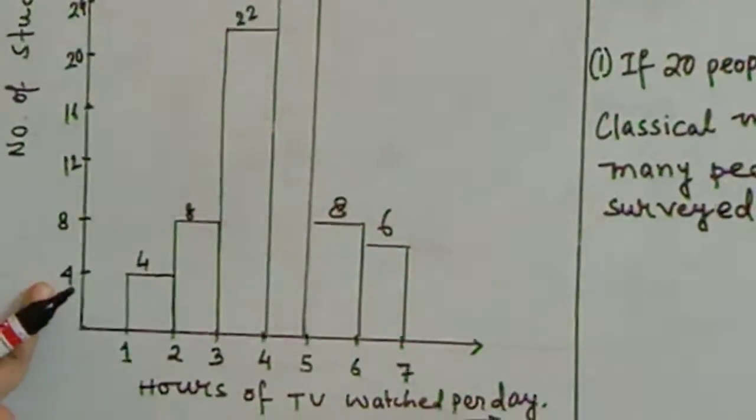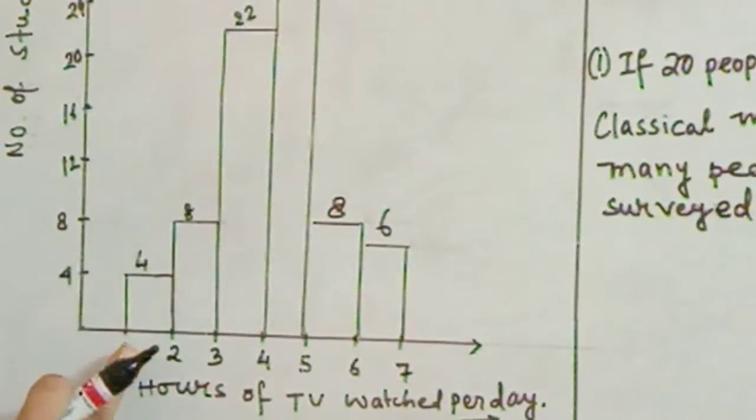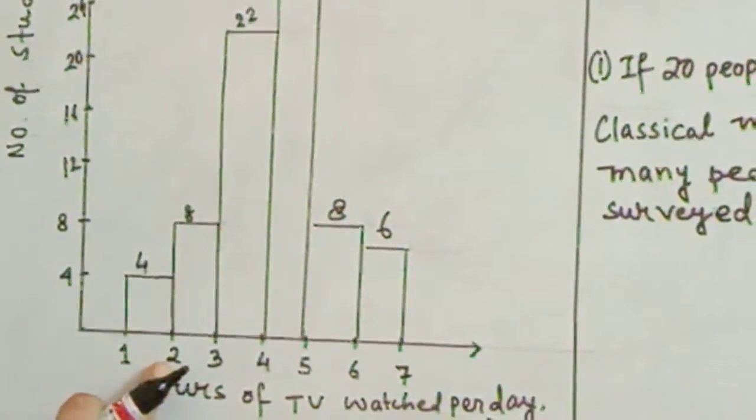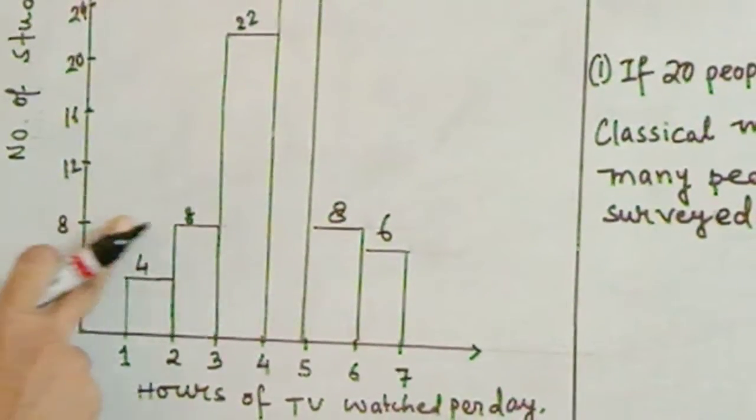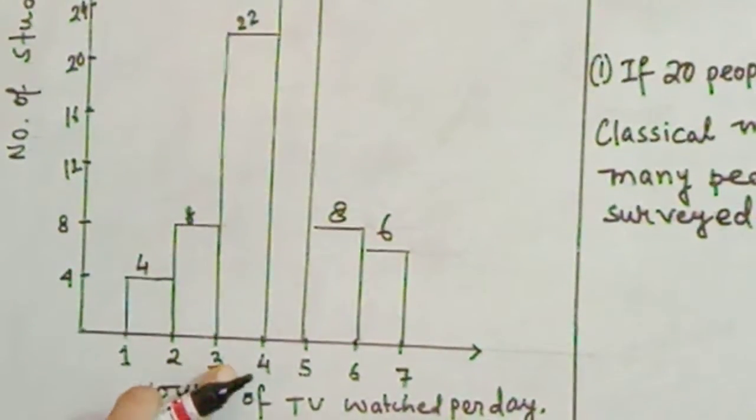4 students watched TV 1 to 2 hours. From this graph you can read that 8 students watched TV 2 to 3 hours.